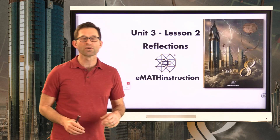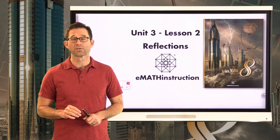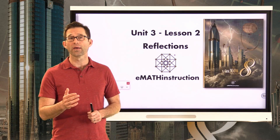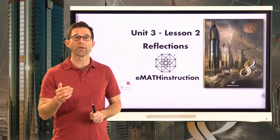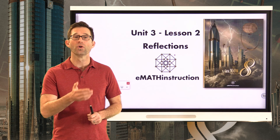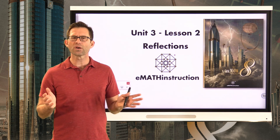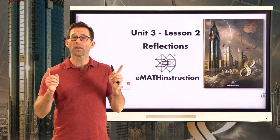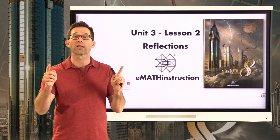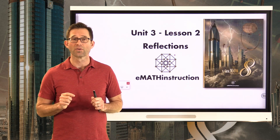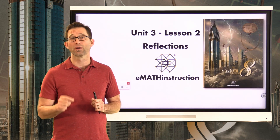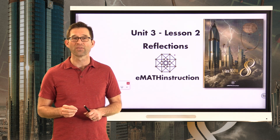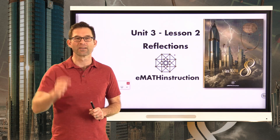Today we saw one of the primary ways to transform a figure: reflections. A reflection is a rigid motion — it gives an image congruent to the pre-image, just in a different location. The line of reflection is the perpendicular bisector of the segment connecting a point with its image, cutting it in half and being perpendicular to it. Thank you for joining me; my name is Kirk Weiler, and until next time, keep thinking and keep solving problems.